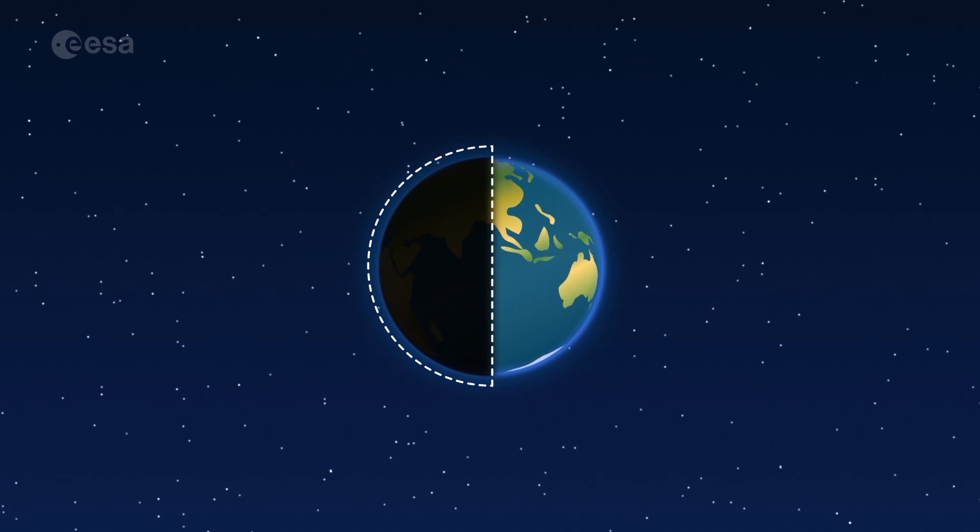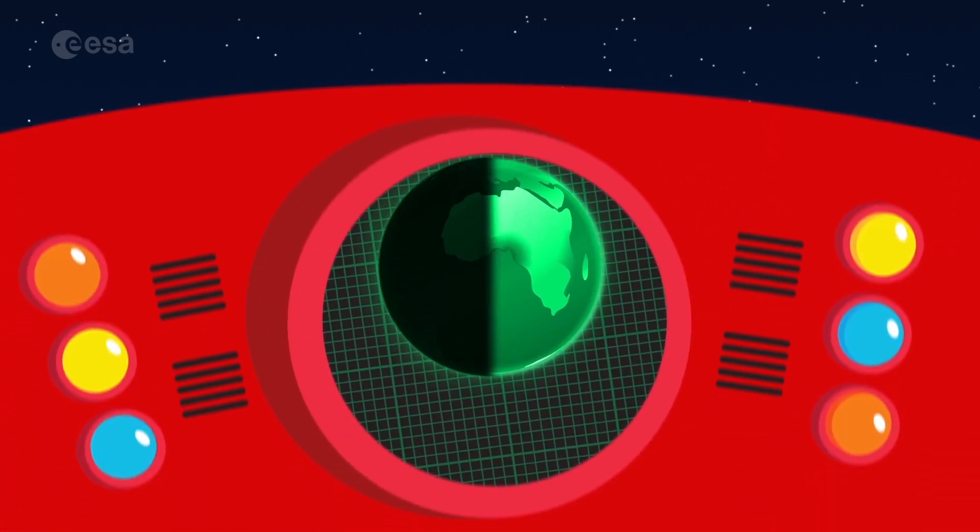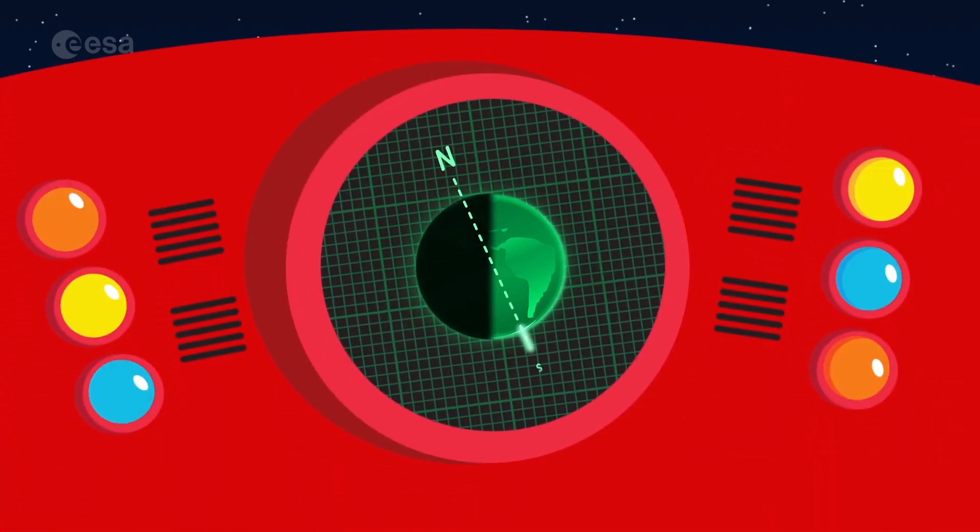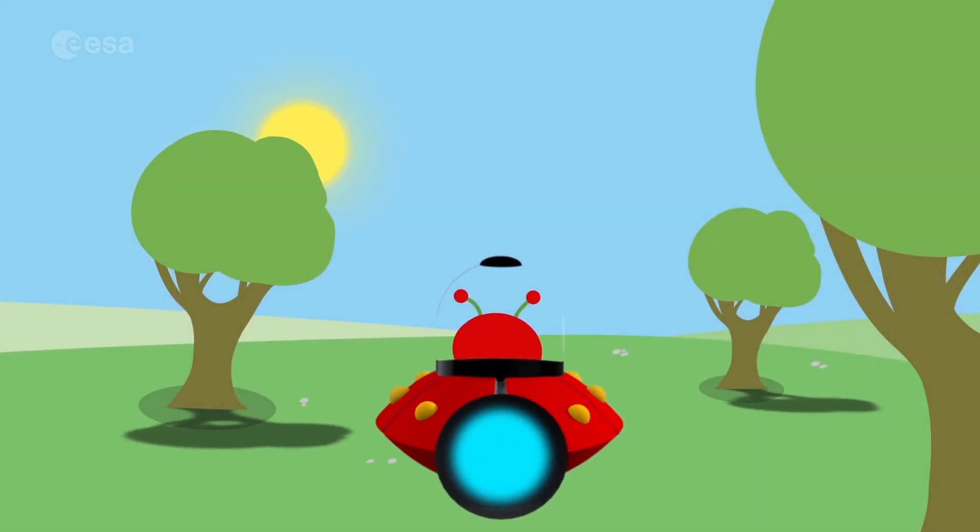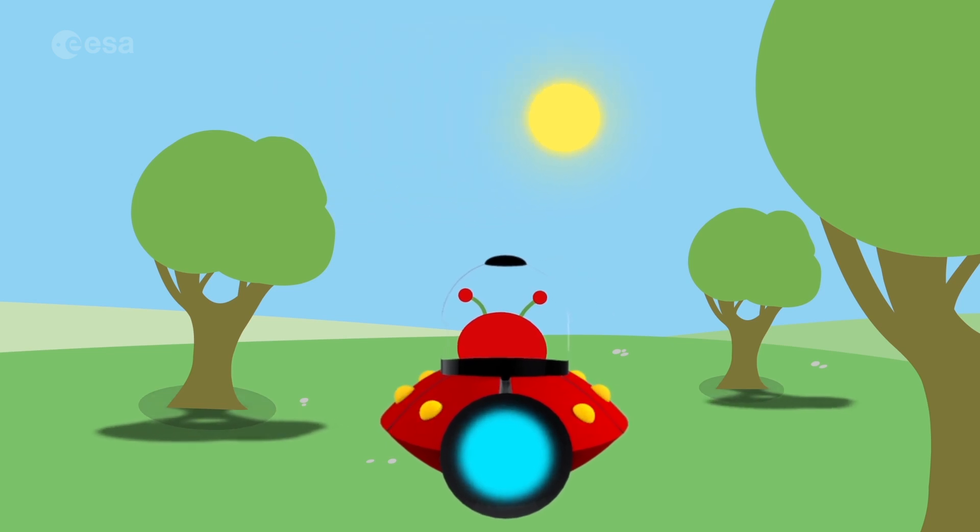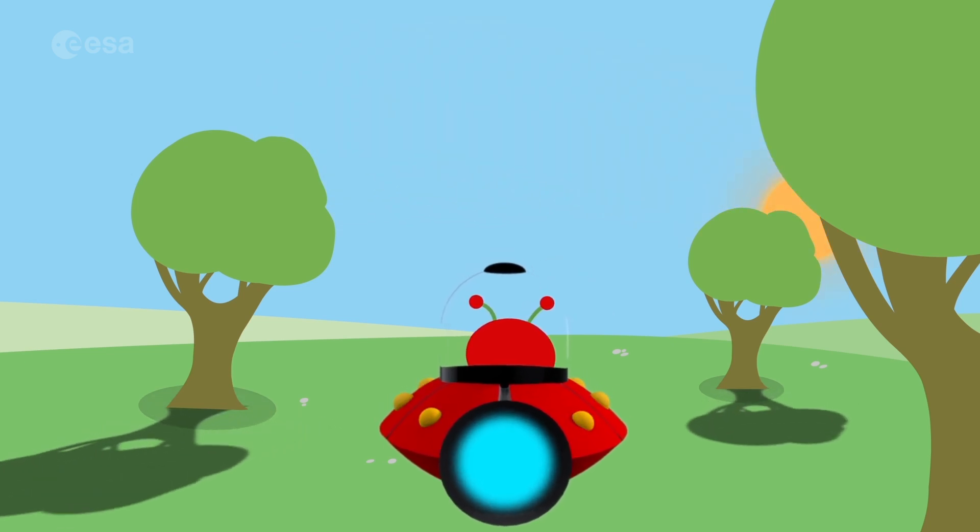The Earth spins on its axis, an imaginary tilted line that goes from the North Pole to the South Pole. From the ground, it looks like the sun and stars are moving. But in fact, it is the Earth that is spinning.